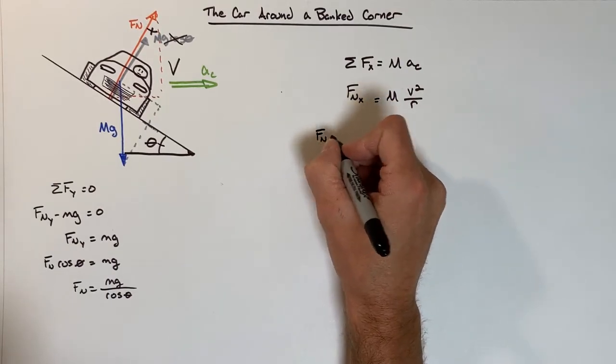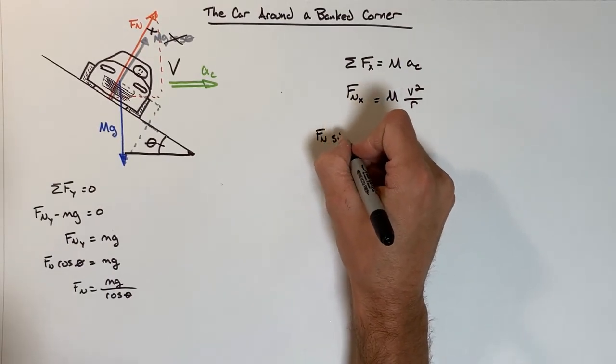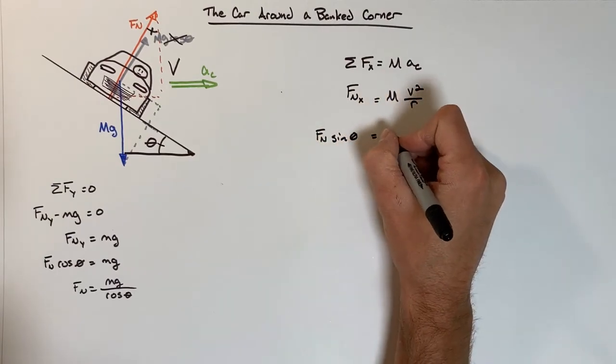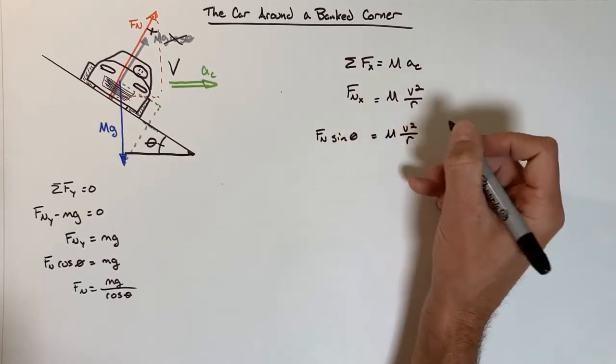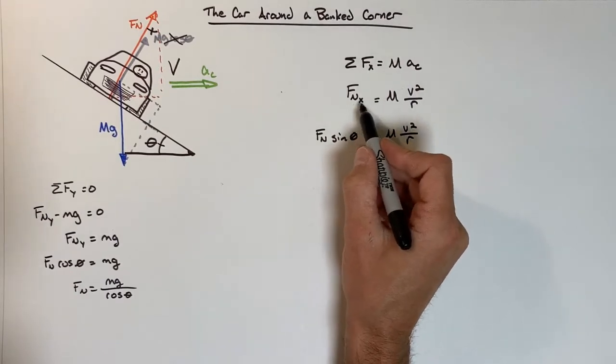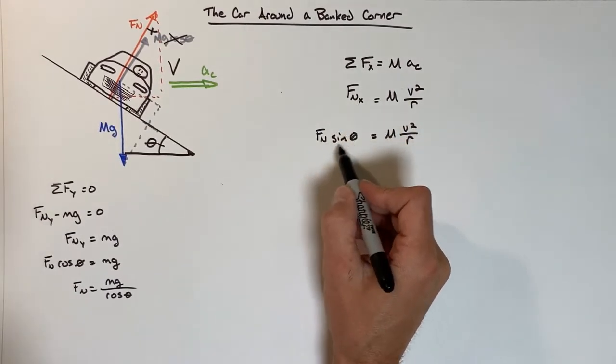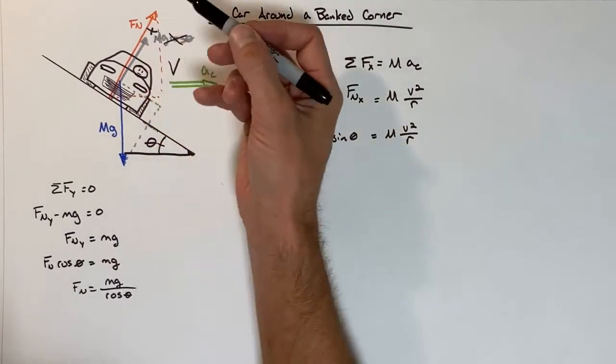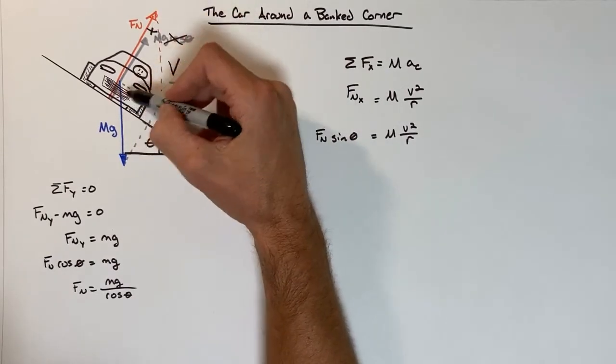Going one step farther and expanding Fn in the x direction, we'll see we have Fn sine theta equals m v squared over r. Now I know this idea that the x component or the horizontal component is a sine, that seems a little bit strange.